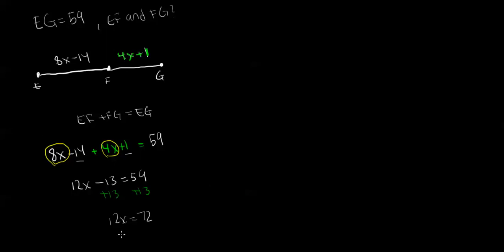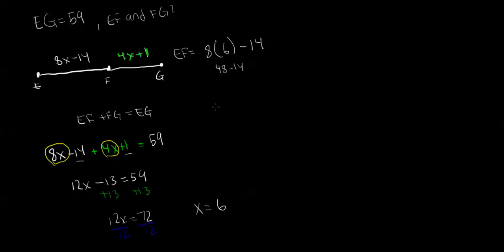In order to get rid of the 12 we divide both sides by 12. That leaves us with X equals 72 divided by 12, which equals 6. Now that we know X equals 6, we can plug it back into each individual equation. So EF equals 8X minus 14. Plugging in 6: 8 times 6 minus 14 equals 48 minus 14, which equals 34. So EF equals 34.